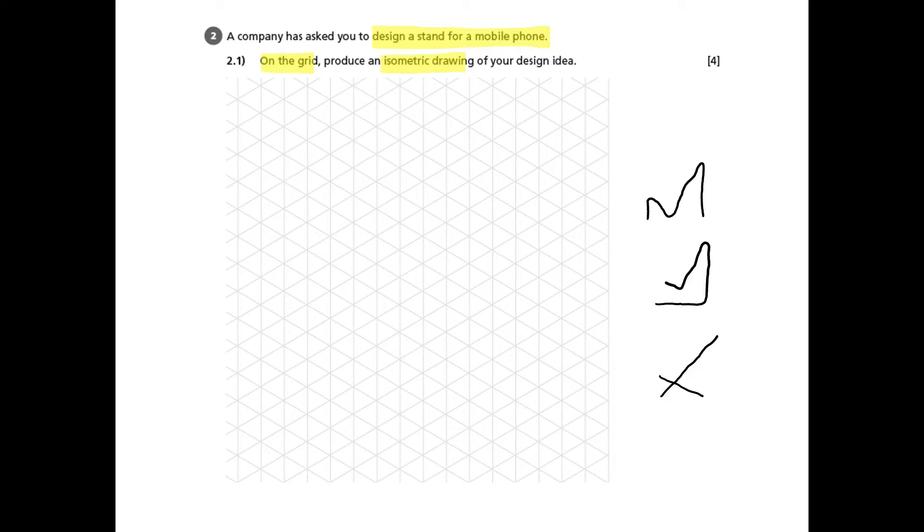The idea is that those side views will then be transferred, one of those across onto the grid paper, onto the isometric grid and develop the design from there. As you can see, they're very simple designs. We'll probably use the middle one.